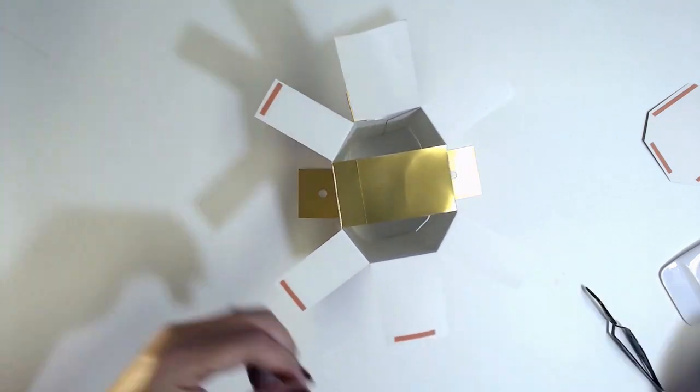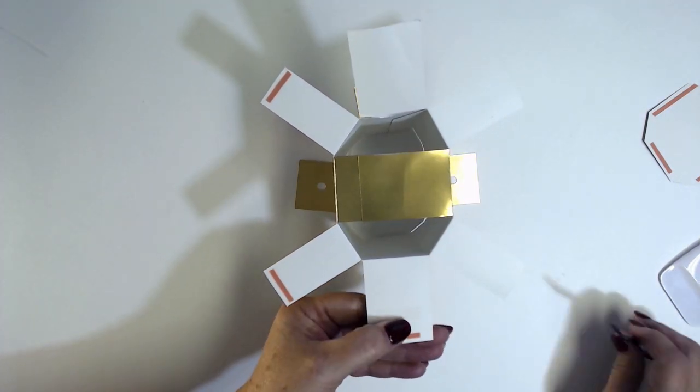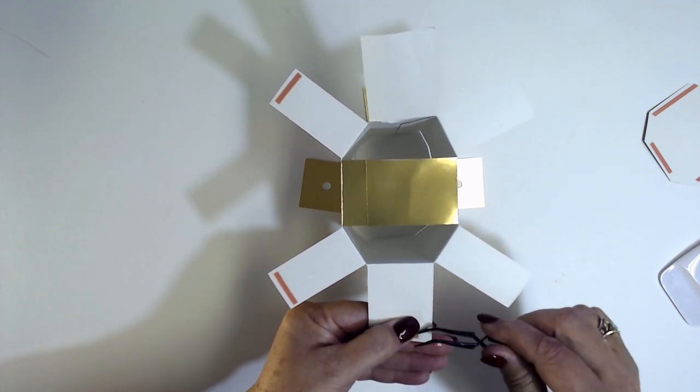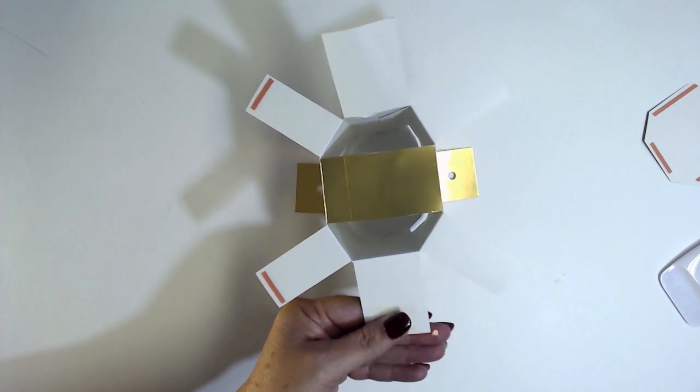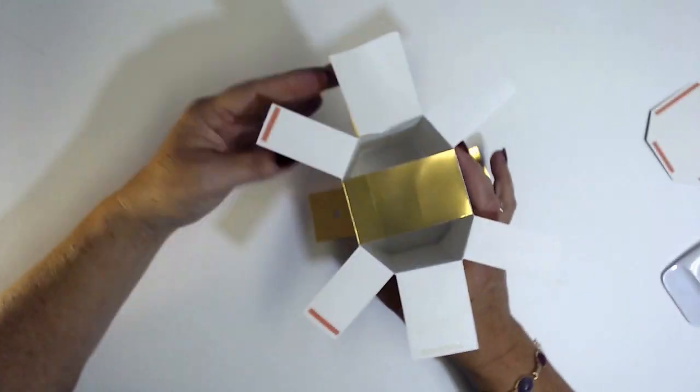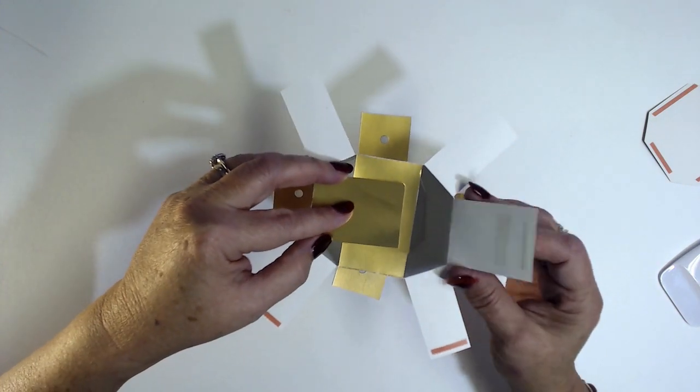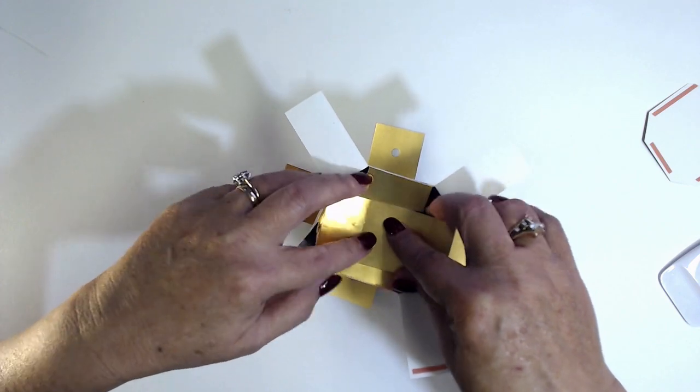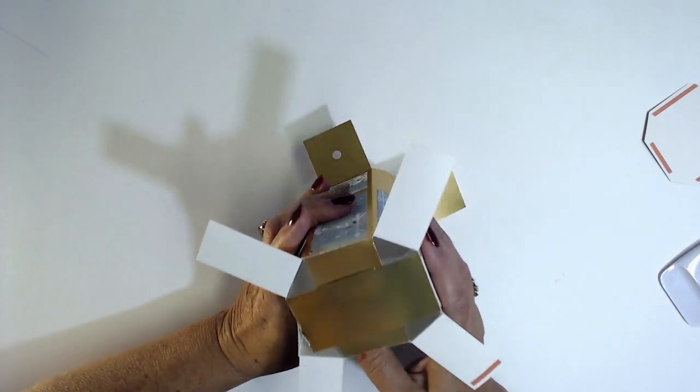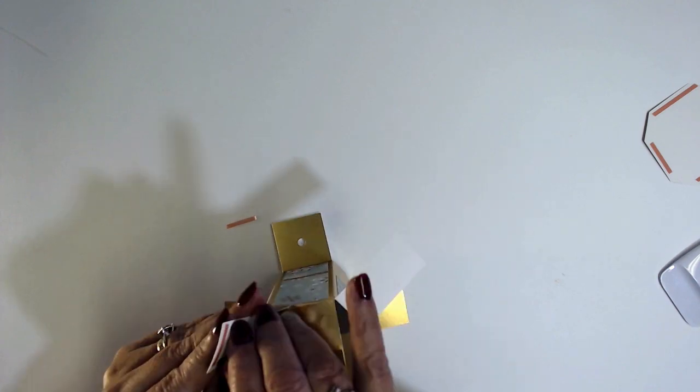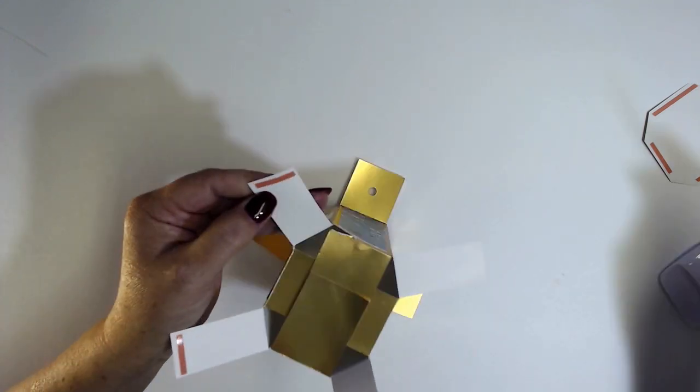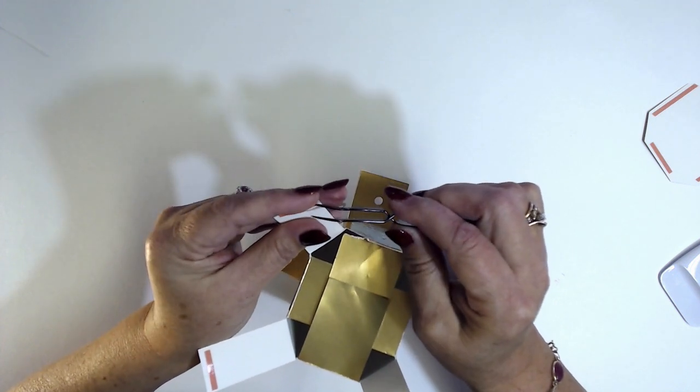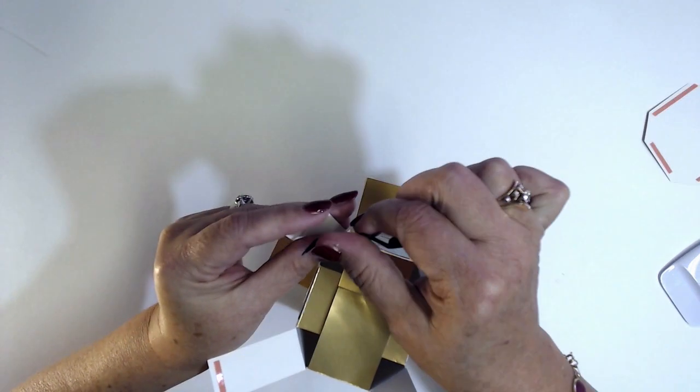Next we're going to do the same thing with this side. I'm going to add some more tape to that one though. Again I'm going to turn it around, I'm going to fold it down, pull this across, you're going to line up the edges.